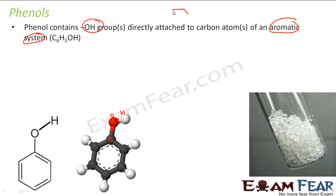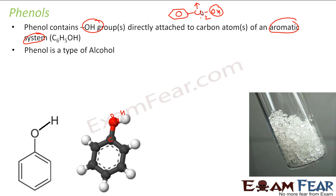One important point: this structure here is NOT a phenol, because the OH is attached to a carbon that is not part of the aromatic ring. In phenol, the OH must be attached directly to the aromatic ring carbon. If the OH is on a side-chain carbon, it is a normal alcohol. Phenol is also considered a type of alcohol by some definitions.